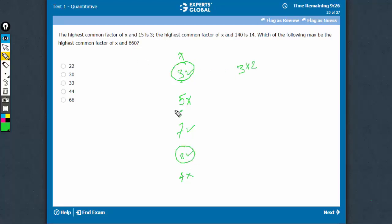660 has a 5 in it but x does not have a 5. So, options which have a 5 should not be there. Options which have a 4 should not be there. Options must have a 3 and a 2. So, options which do not have a 3 should go, and options which do not have a 2 should also go.